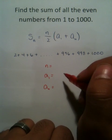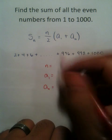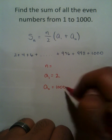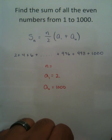Now a sub 1 and a sub n are actually very easy to find. A sub 1 is the very first term in the sequence, 2. A sub n is the very last term, 1000. Easy enough.